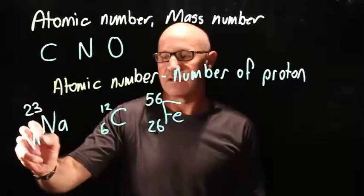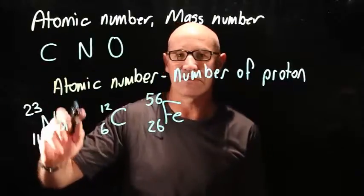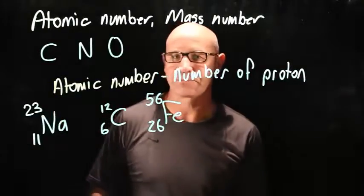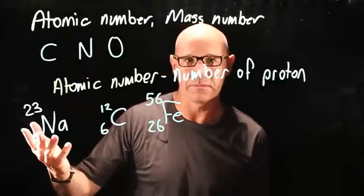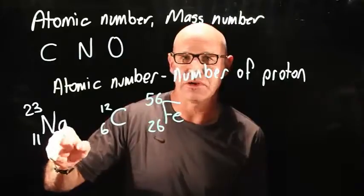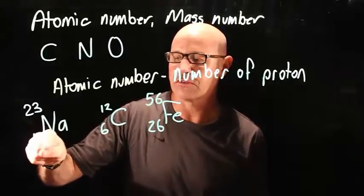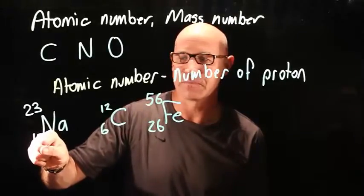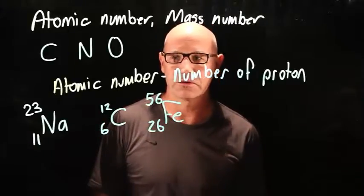So when we have a look at the atomic symbol for an atom or for an element, we've got the name of the element and an abbreviation, and then we've got this number down here. The lower number is the atomic number, the number of protons.